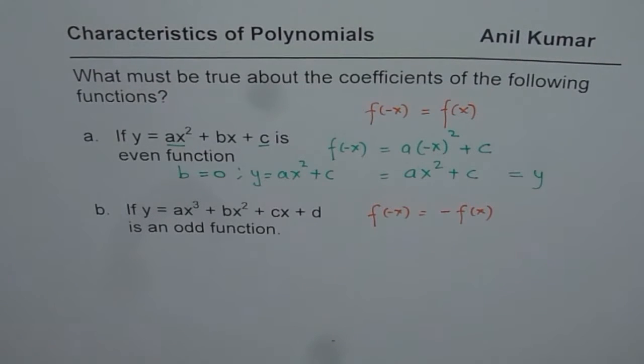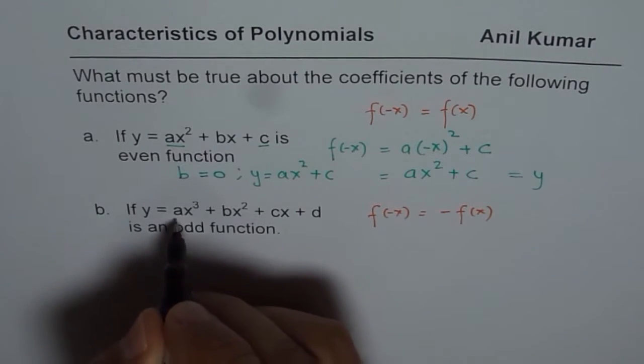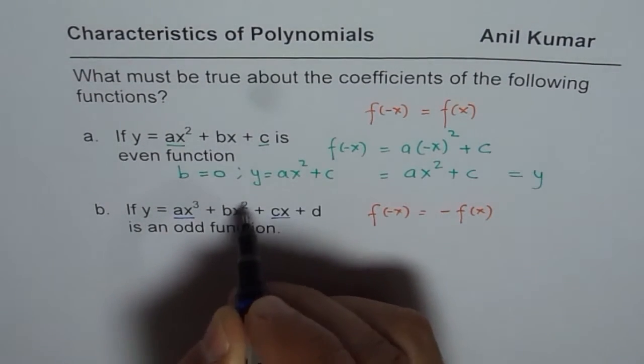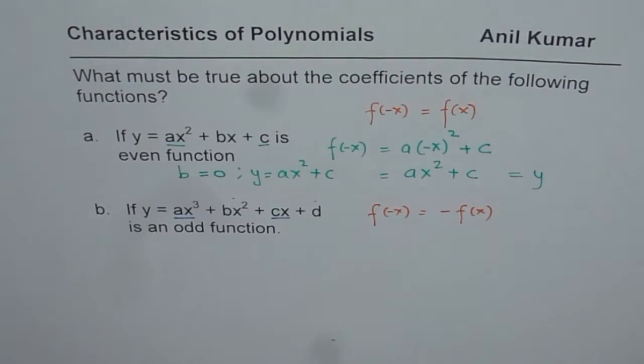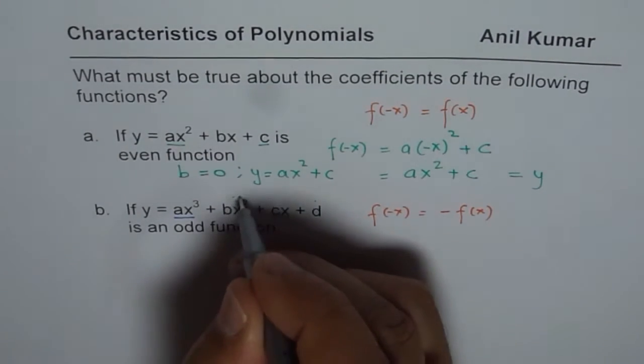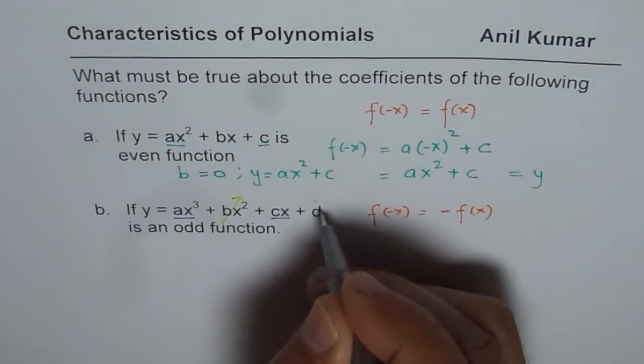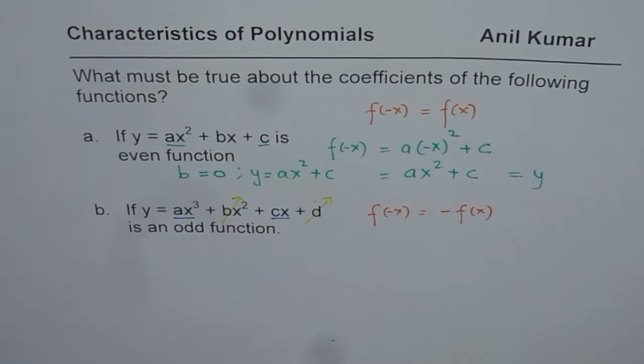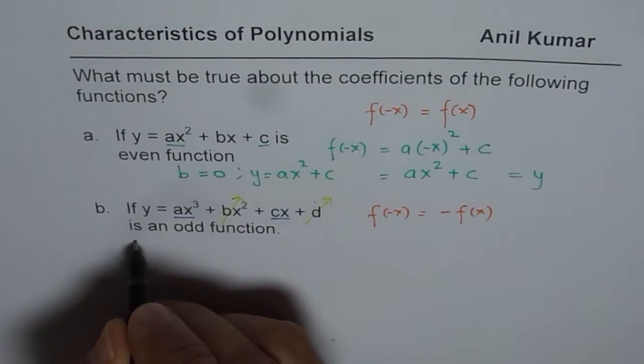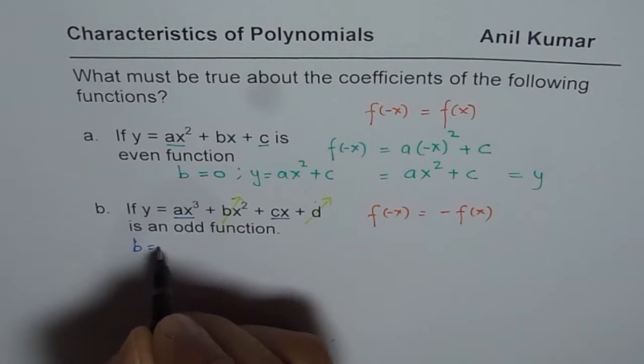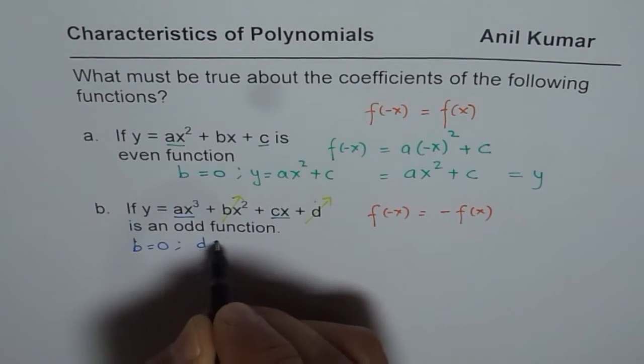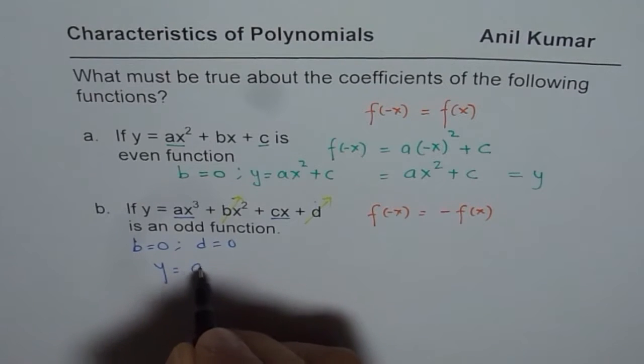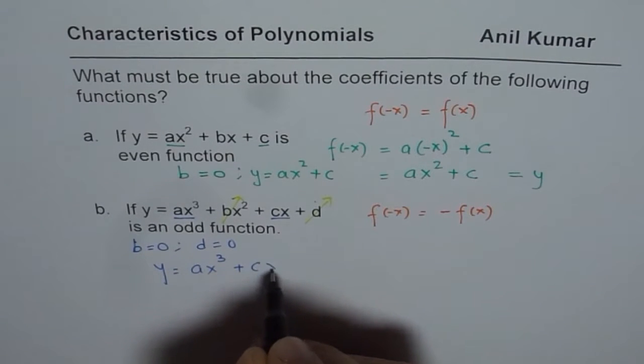Now let's do the second one. When we say this function is an odd function, in that case, first when we check it, this is odd, this is also odd. So we have two even terms. These terms should be zero to make this function an odd function. Do you understand? Only then this will be an odd function. So what we will do is, we'll substitute these two coefficients, b equals zero and d equals zero. Then what we get here is y equals ax³ + cx.